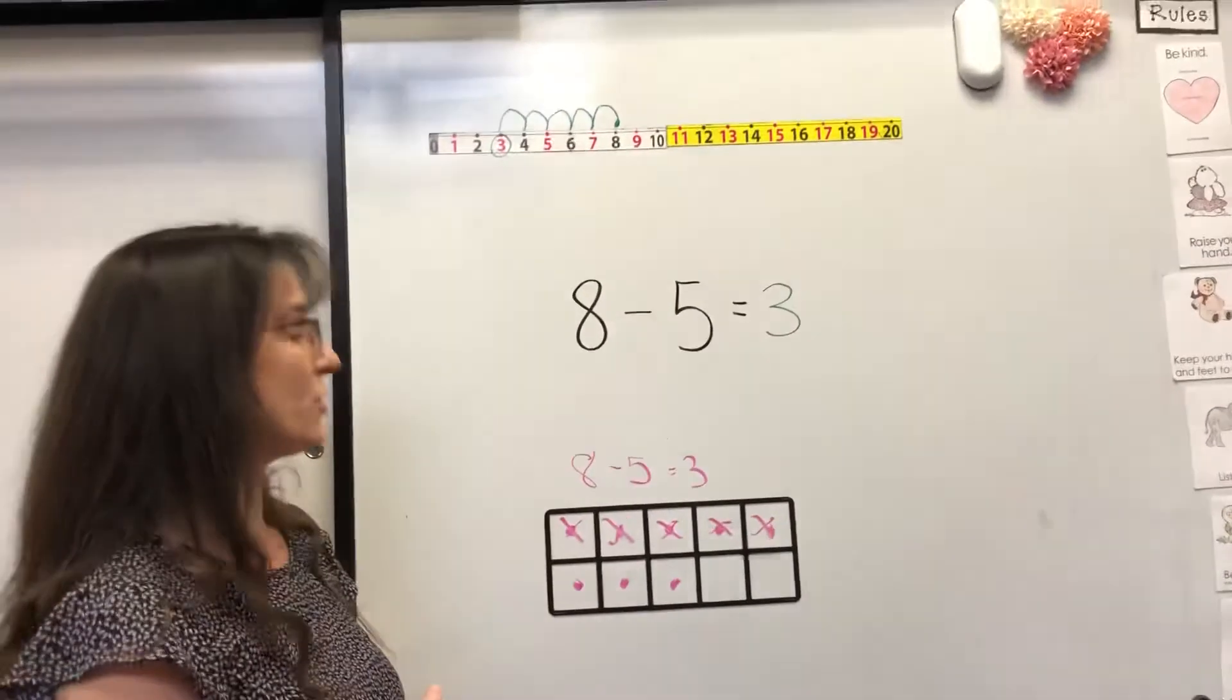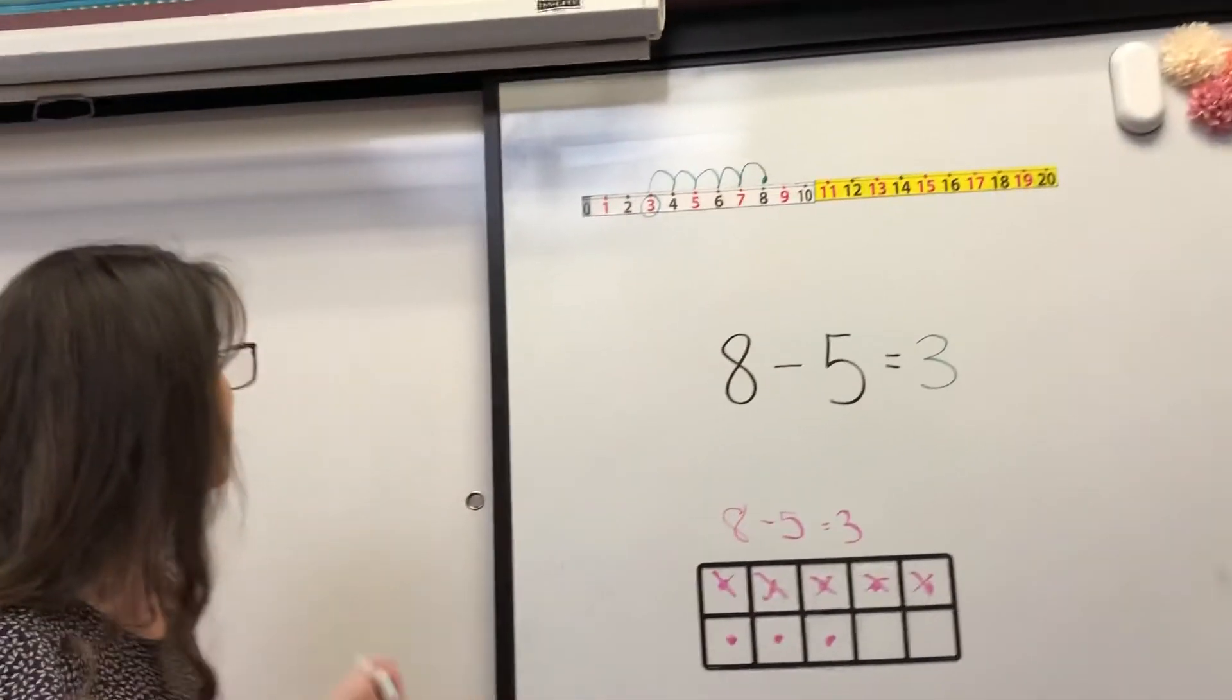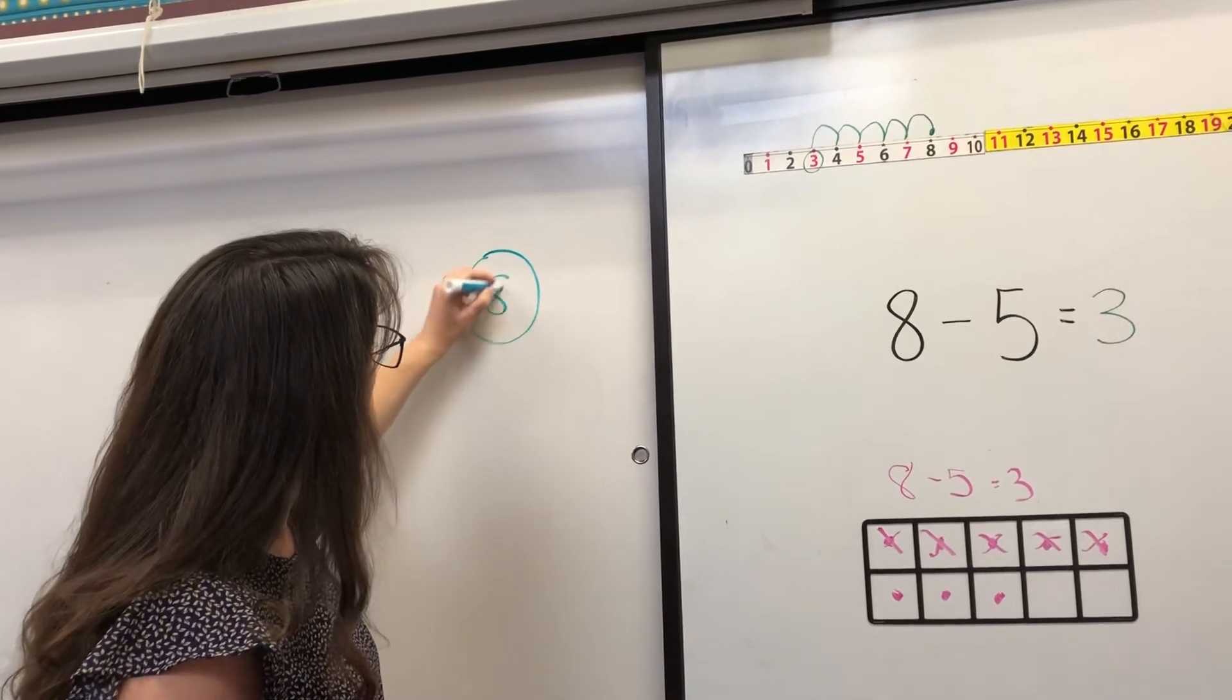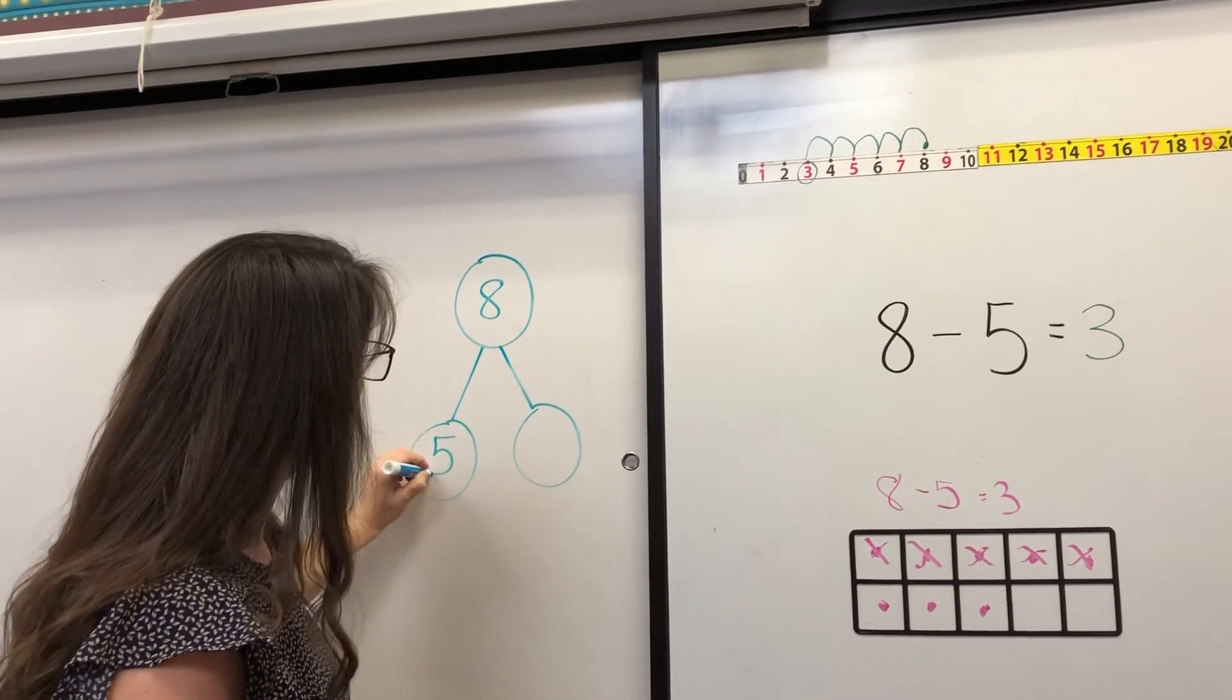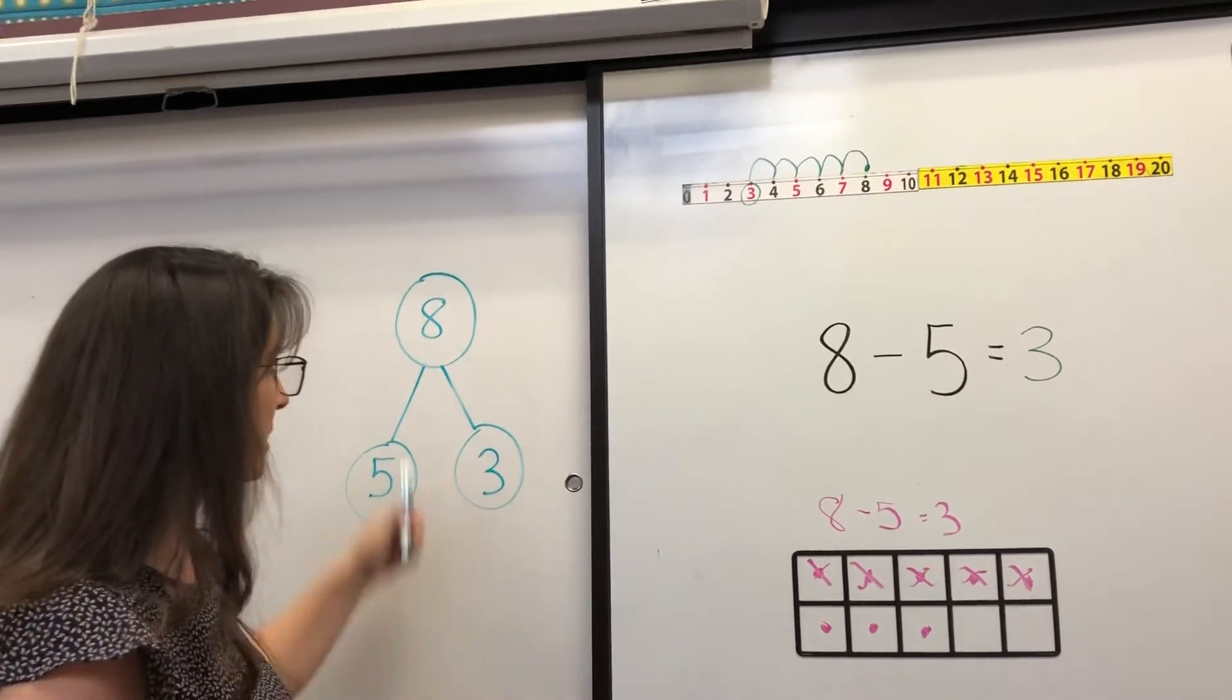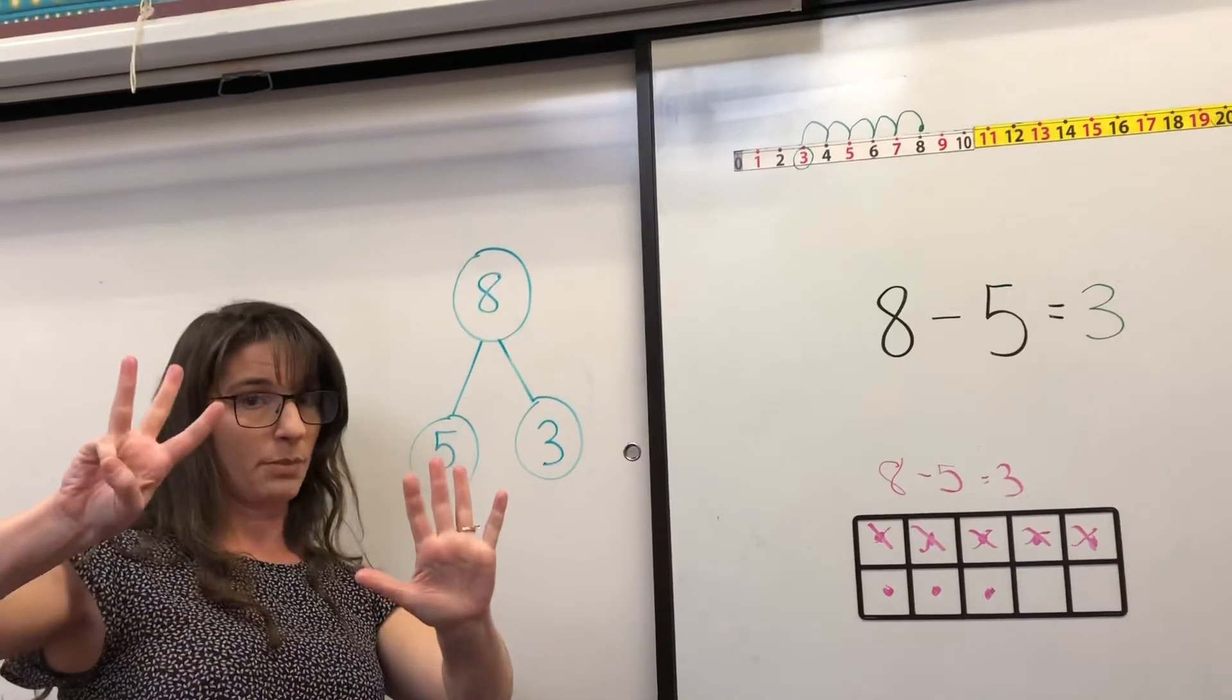And I just showed you the fingers. So now I want to show you a number bond. 8 is the whole. The two parts are 5, and 5 plus what number - 3 - is going to make 8. So if you had 5 fingers up, how many more would you need to make 8? Three more.